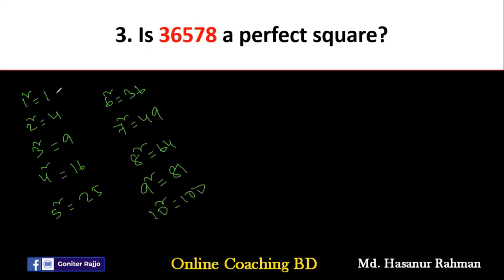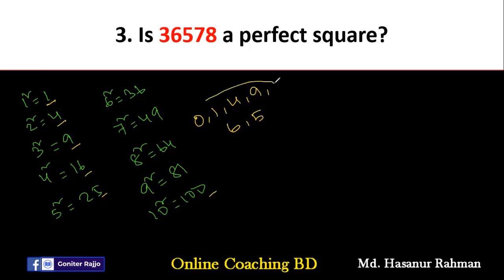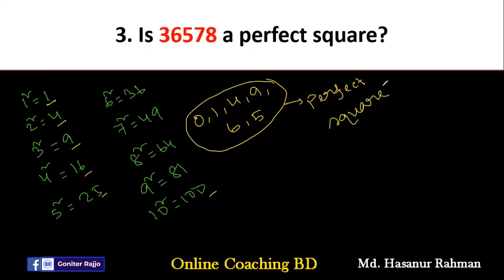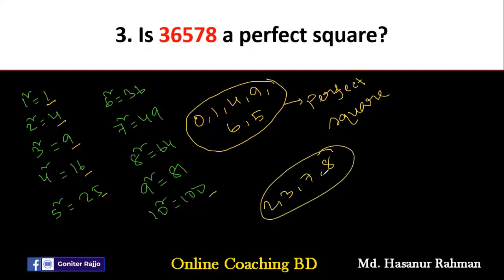If you look at the units digits, you will see that they may be 1, 4, 9, 6, 5, and 0. After computing squares, we know that the unit digit can only be 0, 1, 4, 9, 6, or 5. The remaining numbers 2, 3, 7, 8 — none of these appear as unit digits of perfect squares. So we can say a perfect square cannot end in 2, 3, 7, or 8.